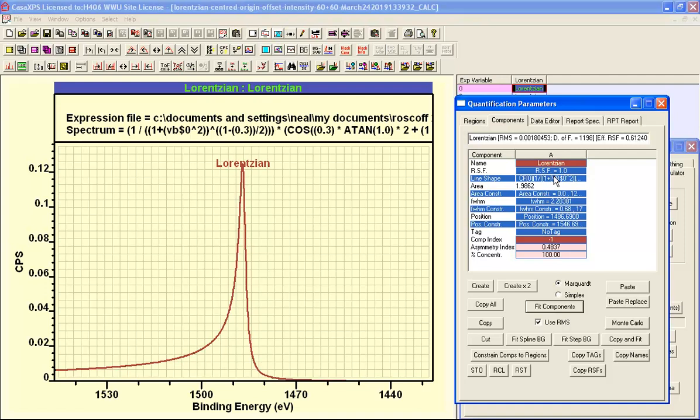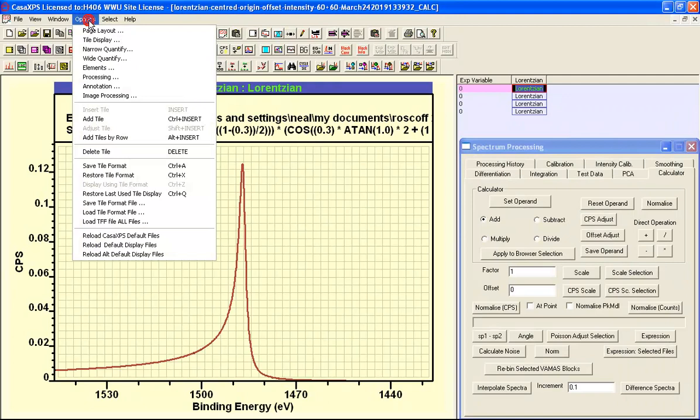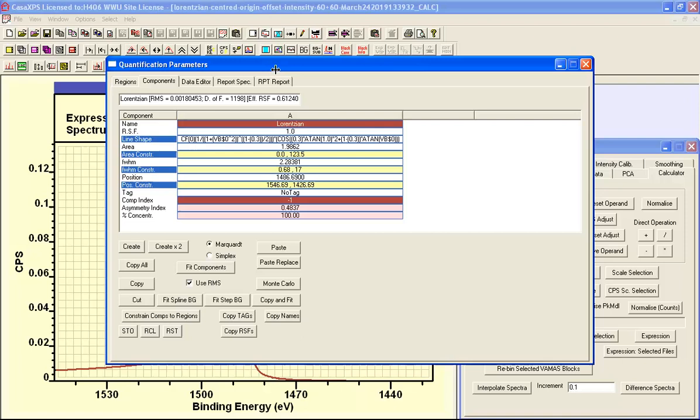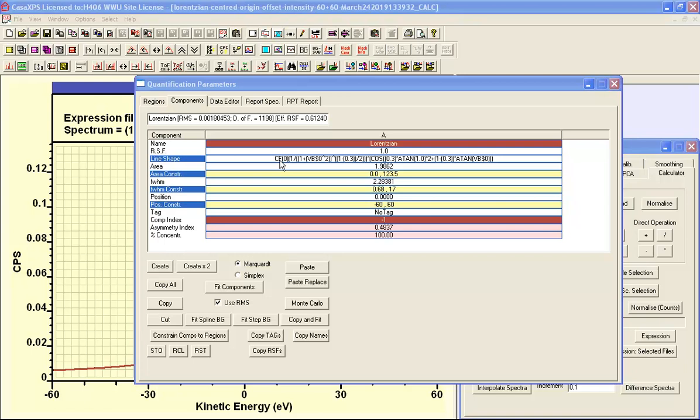So this is a way of prototyping line shapes. It might be useful to make use of the wide form for the parameters window so that you can see the full expression.